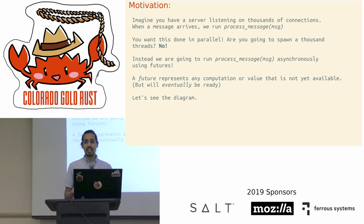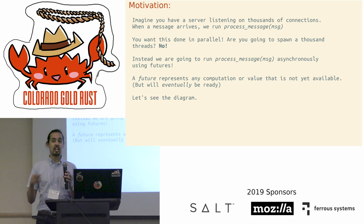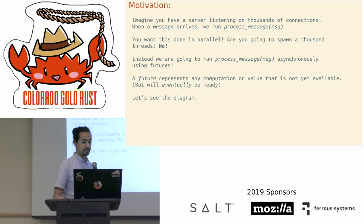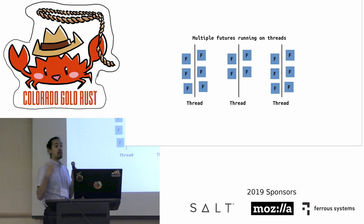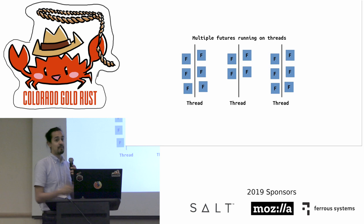The idea behind a future, if you're not familiar, is that it's going to represent any computation or value that's not yet available, but sometime in the future we expect that value to come and be ready for us to use. In this diagram we see a bunch of threads, and each one of these threads is running some Futures. At any given time, one future is going to run, and there's some part of the runtime responsible for multiplexing these Futures among multiple threads — you end up having very lightweight coroutine-type things that run on a heavier-weight OS thread.